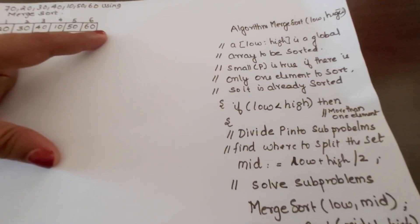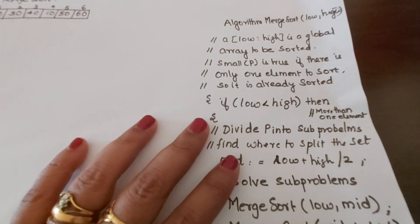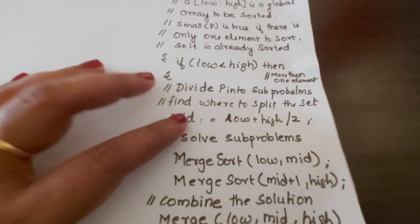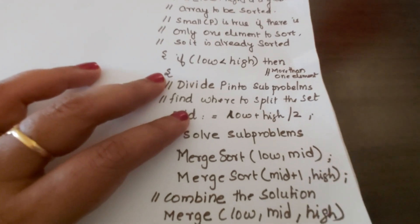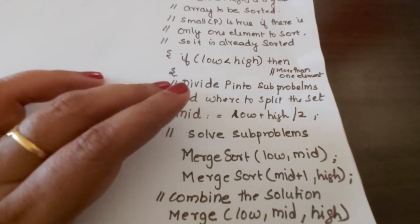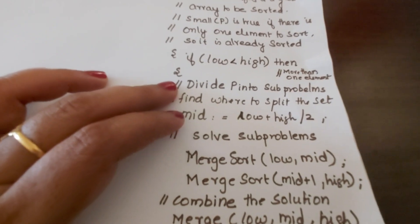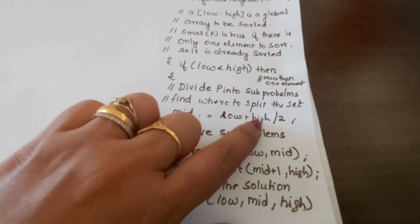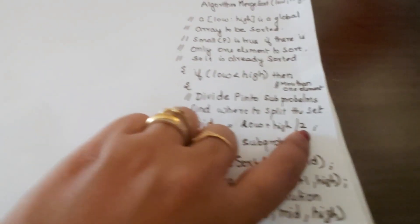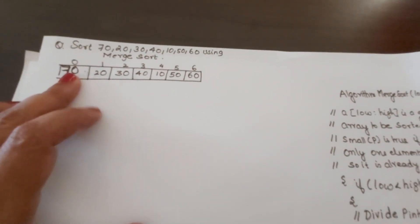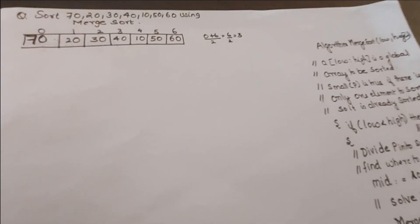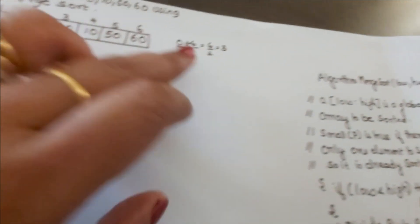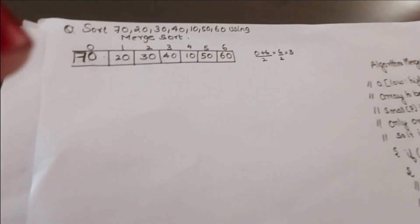When there is more than one element in the array, you divide the problem into sub-problems. You find the splitting point using mid = (low + high) / 2. Here low is 0 and high is 6, so mid = (0 + 6) / 2 = 3.